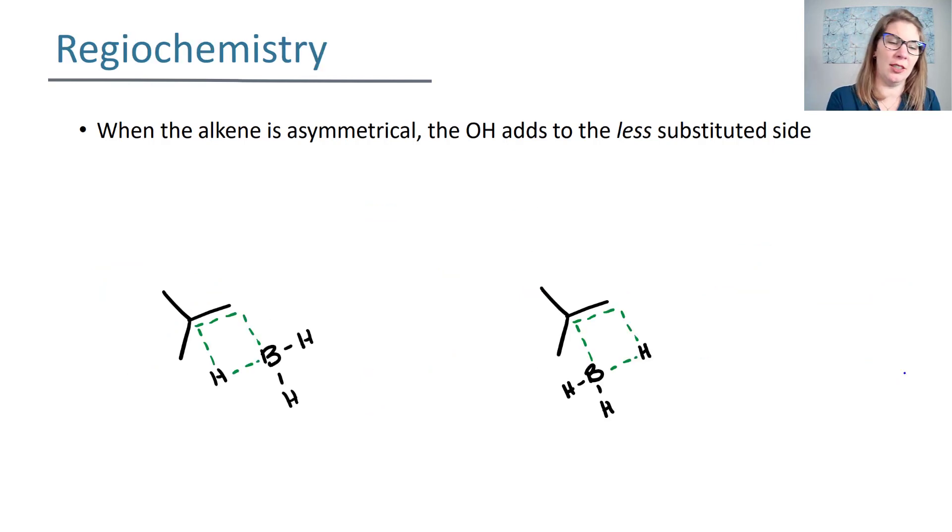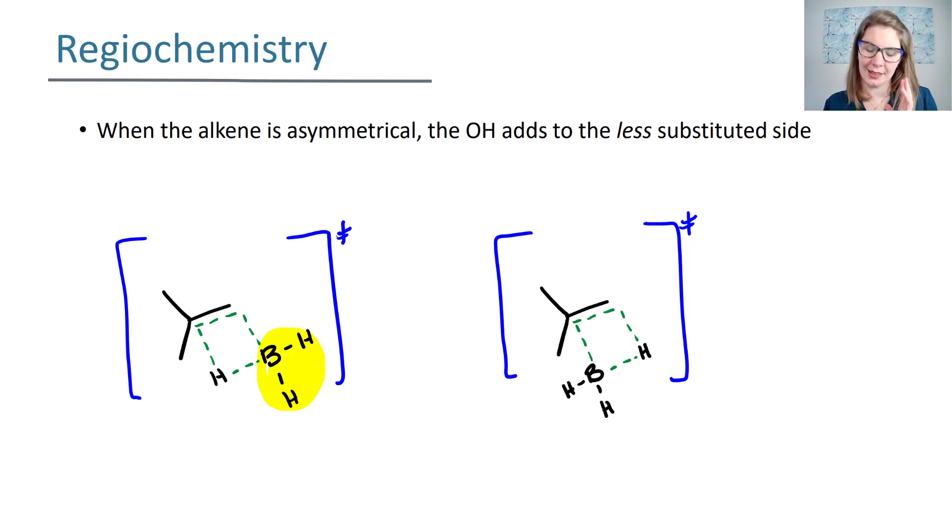Here I've redrawn the transition state. So here's a transition state. Again transition states are brackets with a double dagger, and we're showing all the bonds that are breaking and forming as dashed bonds. If we focus in on the BH2 and where it's located with respect to where that pi bond is. Notice how the BH2 is here and where the pi bond is breaking there's a less substituted and a more substituted side.